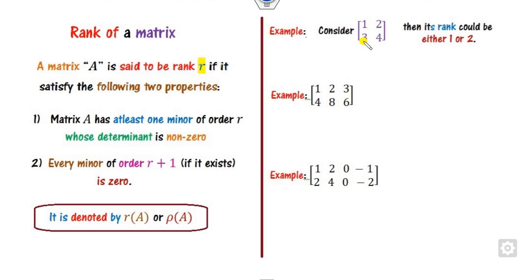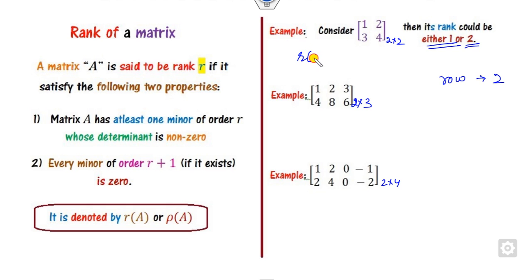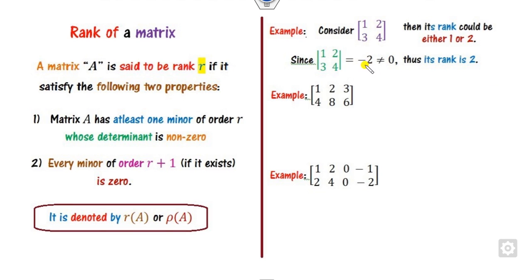For example, looking at three examples: a 2×2, a 2×3, and a 2×4 matrix. Since the maximum number of rows is 2, the rank is either 1 or 2. The rank is 2 when the 2×2 determinant is non-zero. Here the 2×2 determinant is non-zero, so the rank is 2.